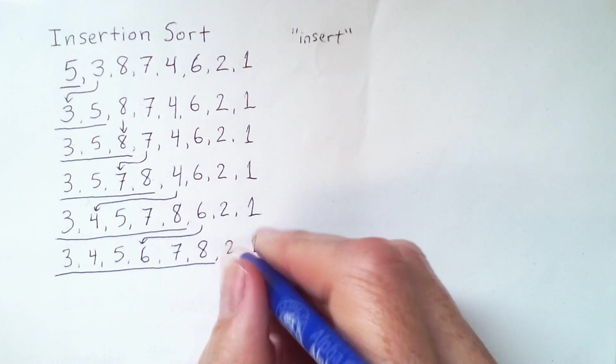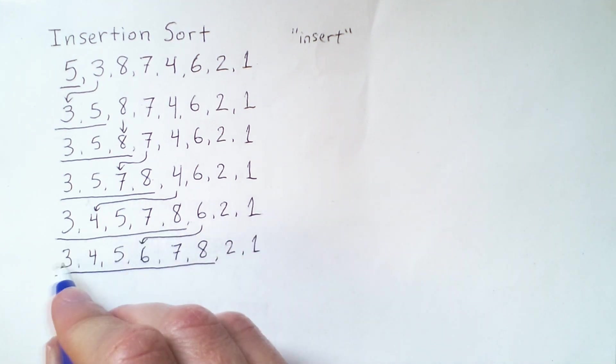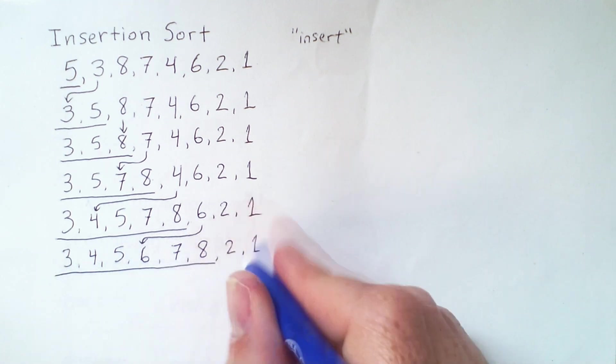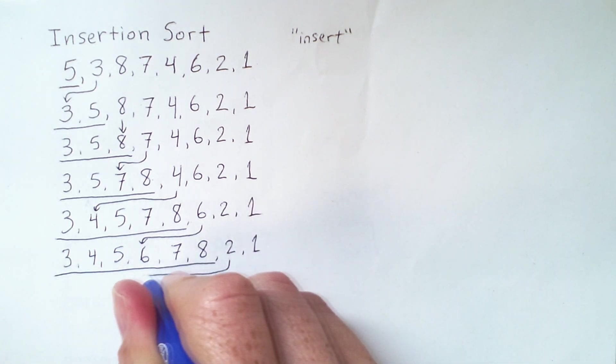And here we have a case where the 2 is less than the first element of our sorted subarray, so it goes all the way back to the start.